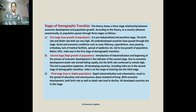First stage: the pre-industrial and pre-modern stage. In this stage, both the birth rate and death rate are very high. This is due to poor social and economic conditions such as mass illiteracy, mass poverty, orthodox beliefs, lack of medical facilities, and spread of epidemics — conditions similar to those in 1921.